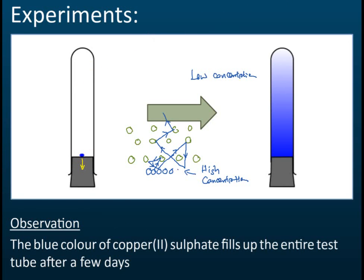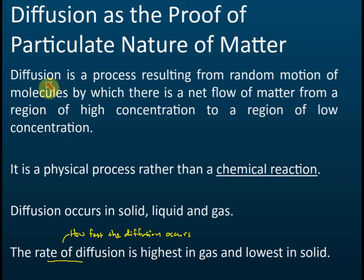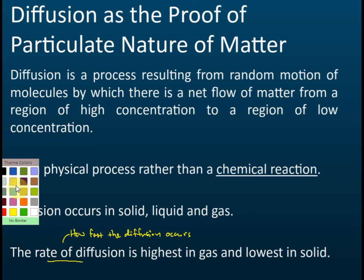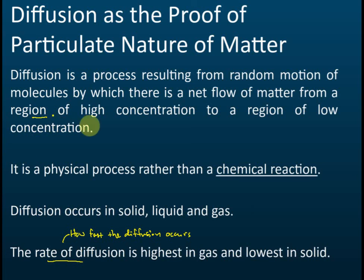In your definition you must state that diffusion is a process resulting from random motions of molecules, by which there is a net flow of matter from regions of high concentration to regions of low concentration. When you define this, you must state that it is from regions of high concentration to regions of low concentration.